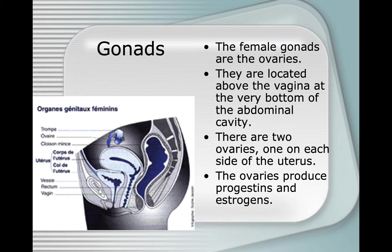After the ectopic pregnancy, she was afraid to get pregnant again and lose her other fallopian tube. Eventually she had IVF done, where they harvested her ova, fertilized them, and she had a set of twins — a little boy and a little girl.